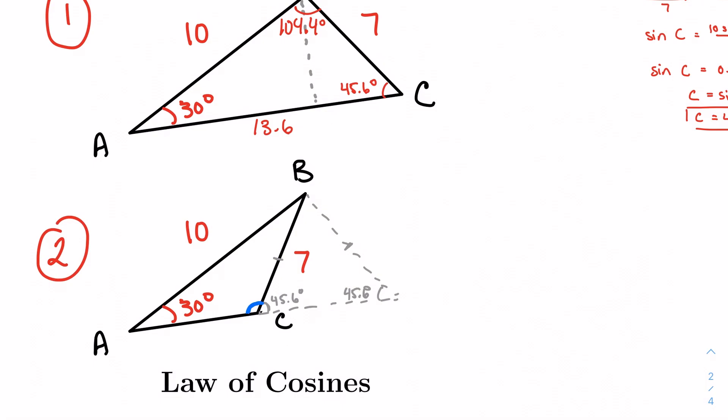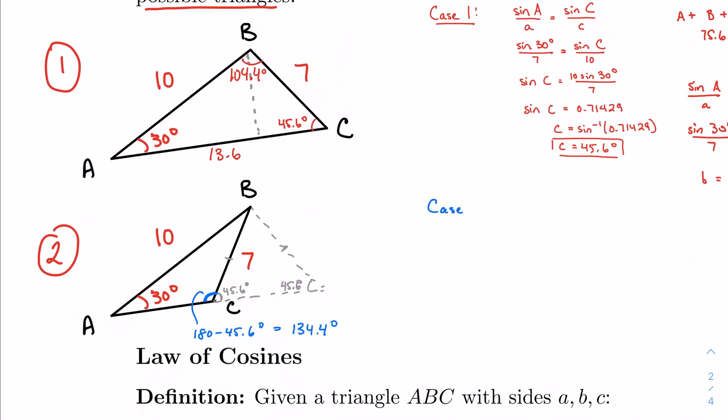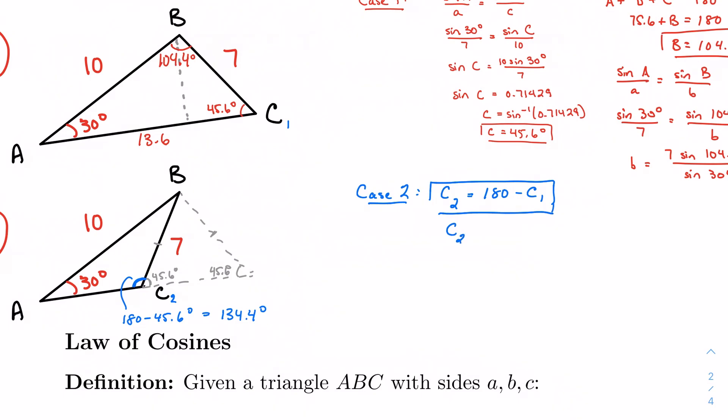45.6 degrees. Which means my new angle C forms a straight line, forms a straight line with 45.6 degrees. And we know that there are 180 degrees in a straight line, straight angle. So this is 180 minus 45.6 degrees is going to be 134.4. So the way we find our new C, so I'm going to call our case one angle C, C1, and our case two angle C, C2, the way we find C2 every single time is 180 minus C1.